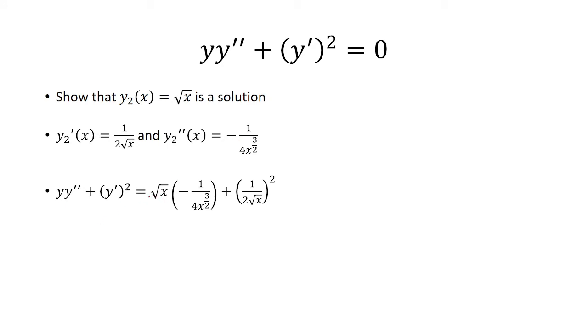So we'll put y equals square root of x. y double prime is negative 1 over 4x raised to 3 halves power. And then y prime is 1 over 2 times root x.